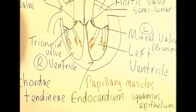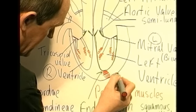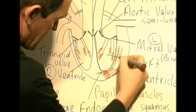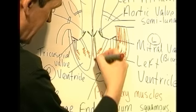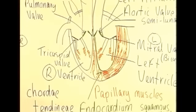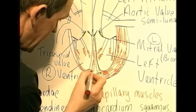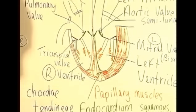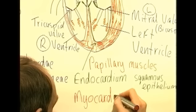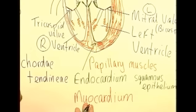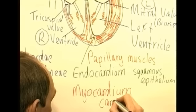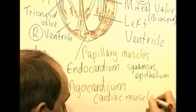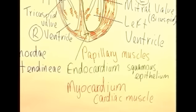Now the middle layer of the heart is by far the thickest layer — it extends all around the wall and also in the middle part. This is the heart muscle. The heart is a pump and it needs muscle tissue to generate the energy for the pumping action. This middle layer is referred to as the myocardium — 'myo' means muscle, 'cardium' relates to the heart, so literally the heart muscle. And that's made out of cardiac muscle tissue, specialised muscle tissue found in the myocardium and nowhere else in the body.